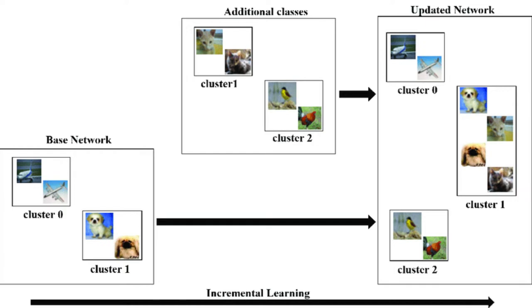Let's take another example of clustering to see how exactly incremental learning works. In the first block you can see we have the base network, with cluster zero related to planes and cluster one related to dogs. Our base deep neural network has learned about this base network. Then we showed some cat images and some bird images. Now our updated network — the newly learned model — has more knowledge: it knows about planes, dogs, cats, and birds, giving us three clusters. This way, if you keep showing more data to an already trained model, it will keep learning and increasing its knowledge.